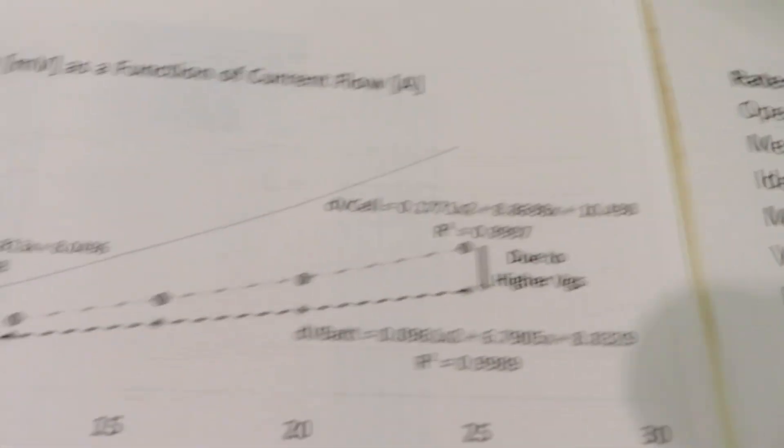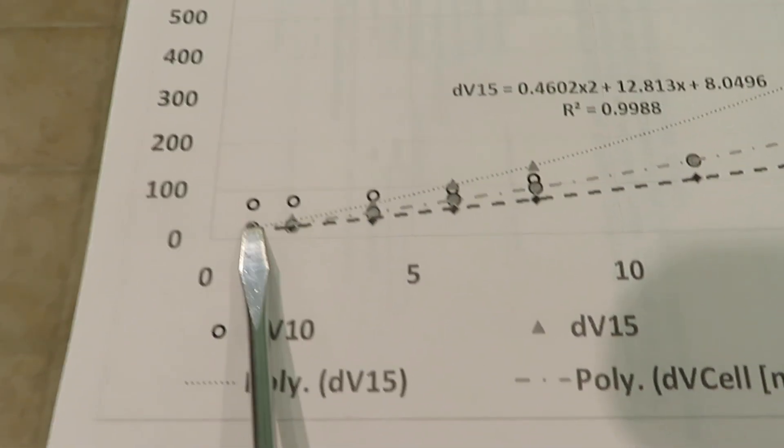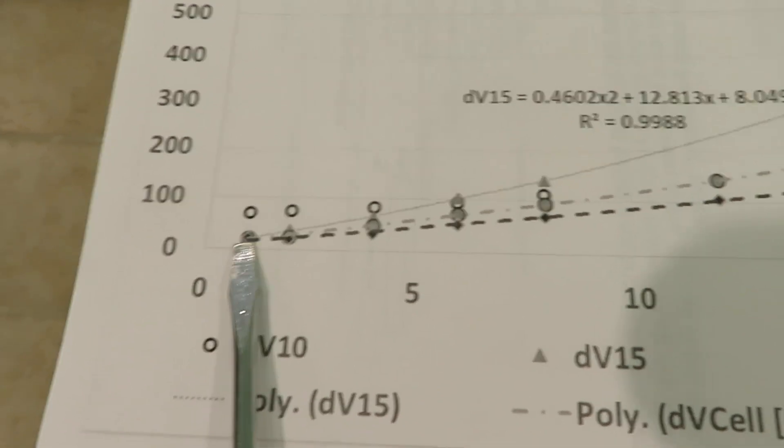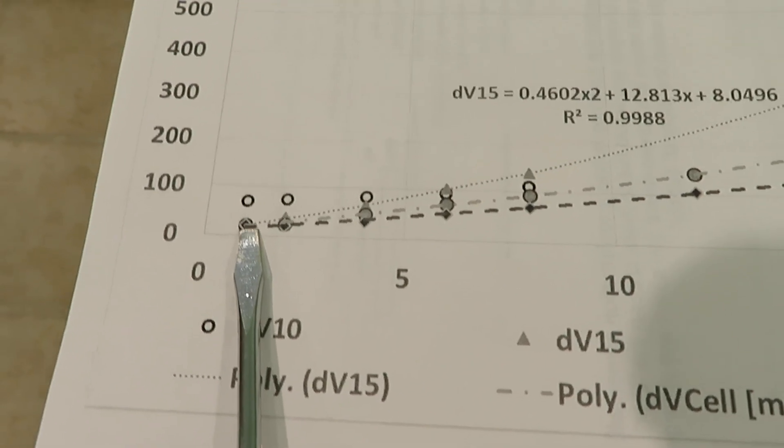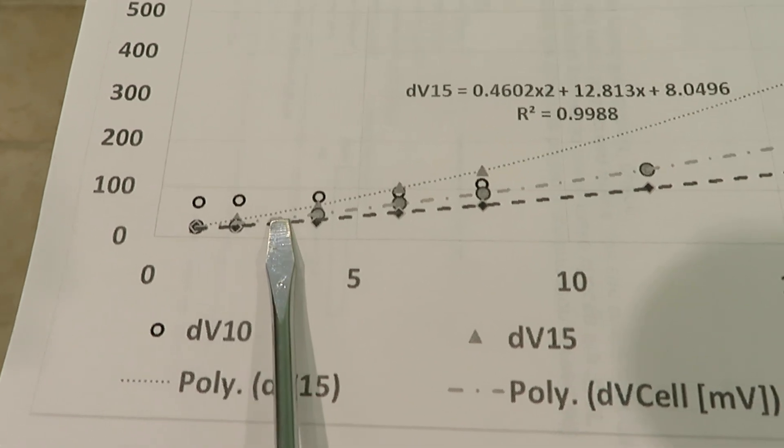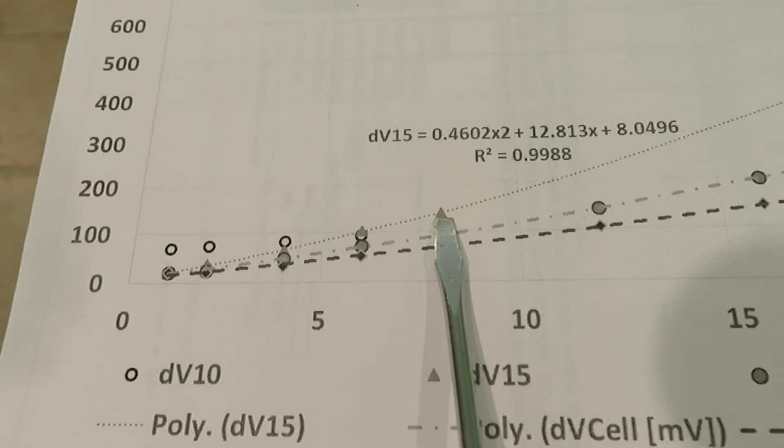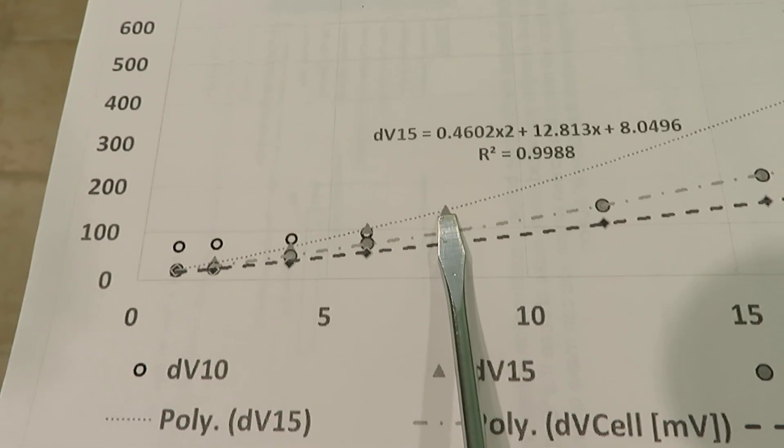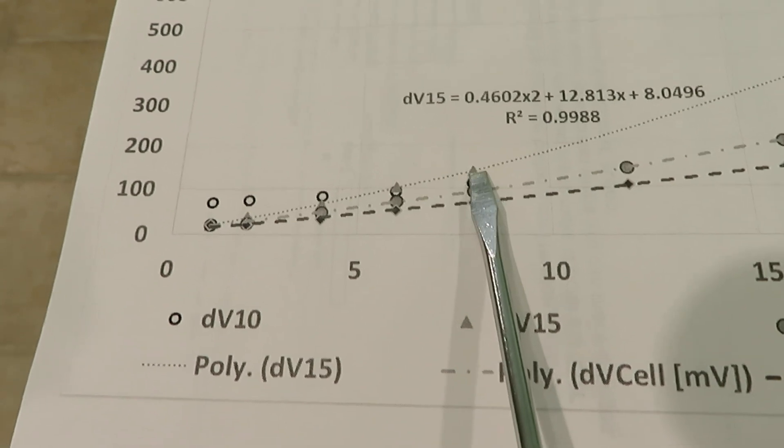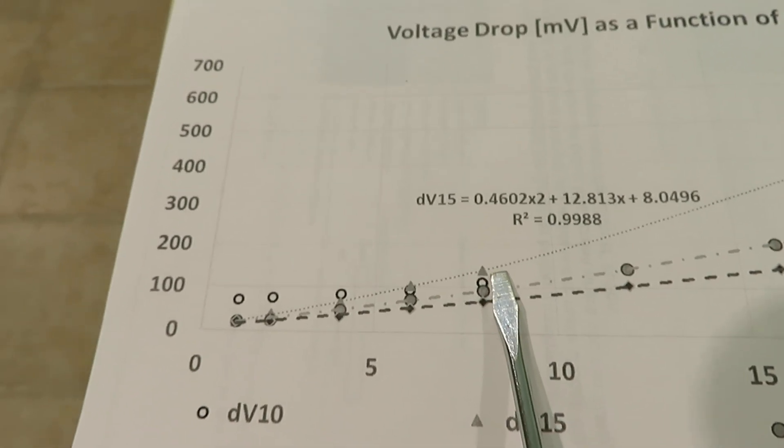The triangle is the original 15 amp. The triangle has pretty low voltage drop, about 20 millivolt at 1 amp, and it climbs up to maybe about 140 millivolt when it gets to 8 amps.